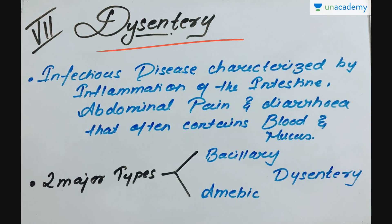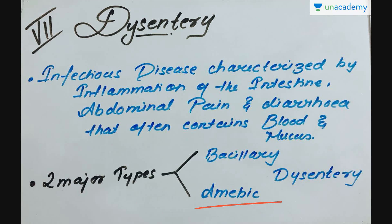Dysentery is an infectious disease characterized by inflammation of the intestine, abdominal pain, and diarrhea, with stools that often contain blood and mucus. It is a significant cause of illness and death in young children, particularly in less developed countries. There are two major types: bacillary and amoebic dysentery, caused by bacteria and amoebas respectively. After an incubation period of 1 to 6 days, the disease has an abrupt onset of fever and frequent watery stools which may contain blood, and vomiting may occur with rapid dehydration due to copious loss of body fluids.